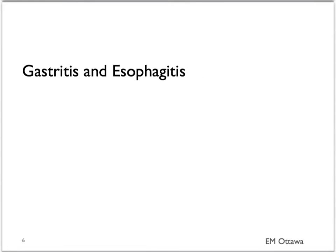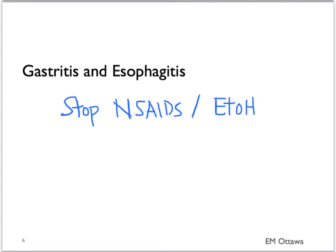For gastritis and esophagitis, patients often have quite a small amount of bleeding, so there is no urgent specific treatment. Remember that a lot of these patients have esophagitis and gastritis based on use of NSAIDs and alcohol, so we will try to counsel the patients to stop these. Sometimes antacid therapy is started when the patient goes home.